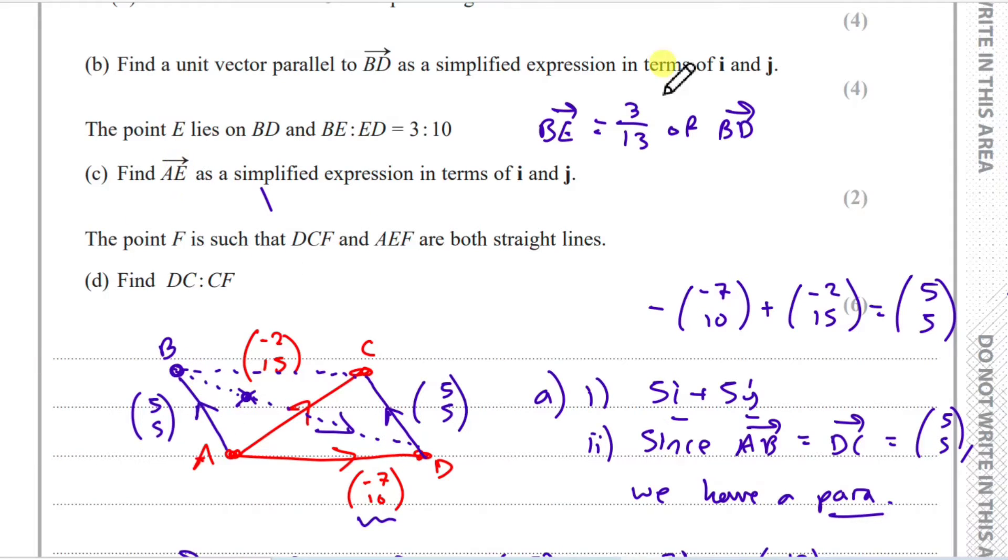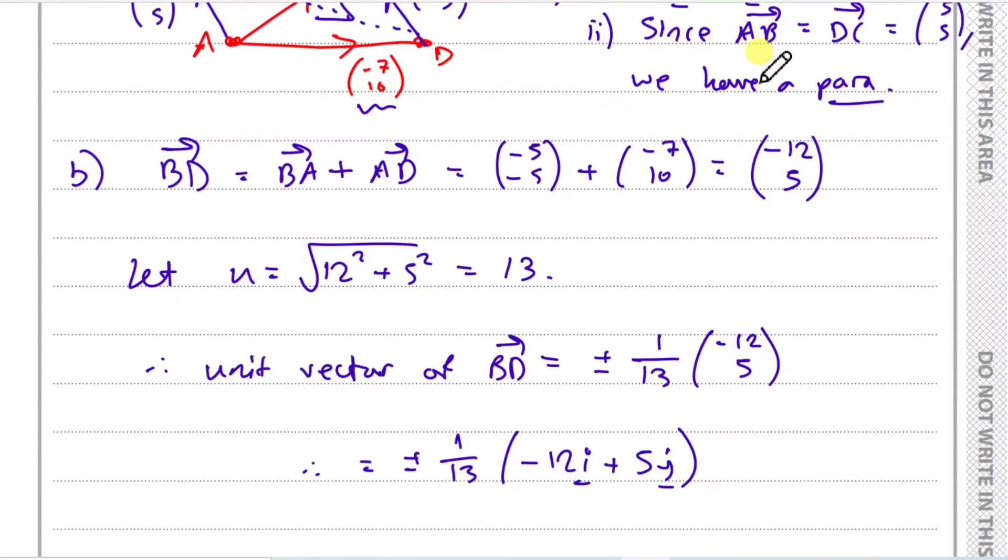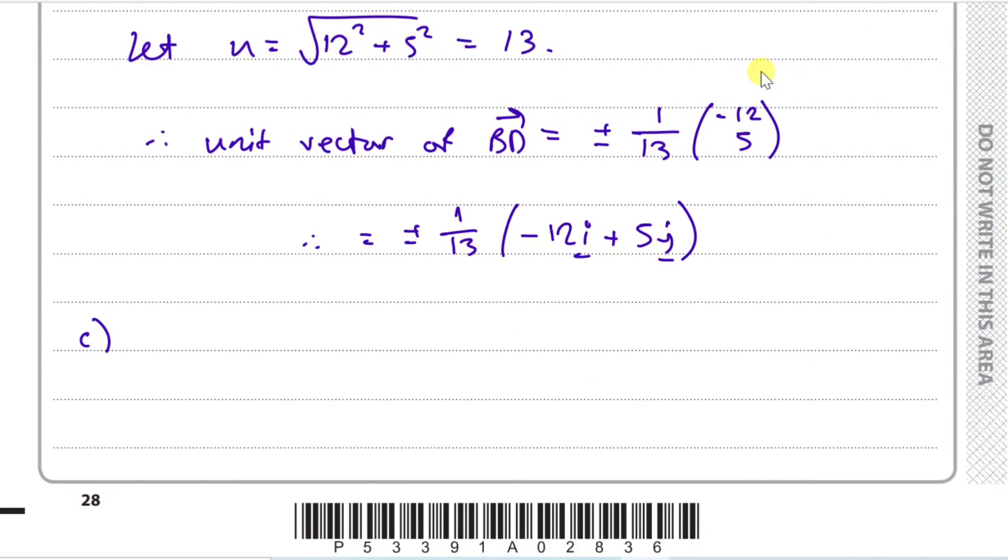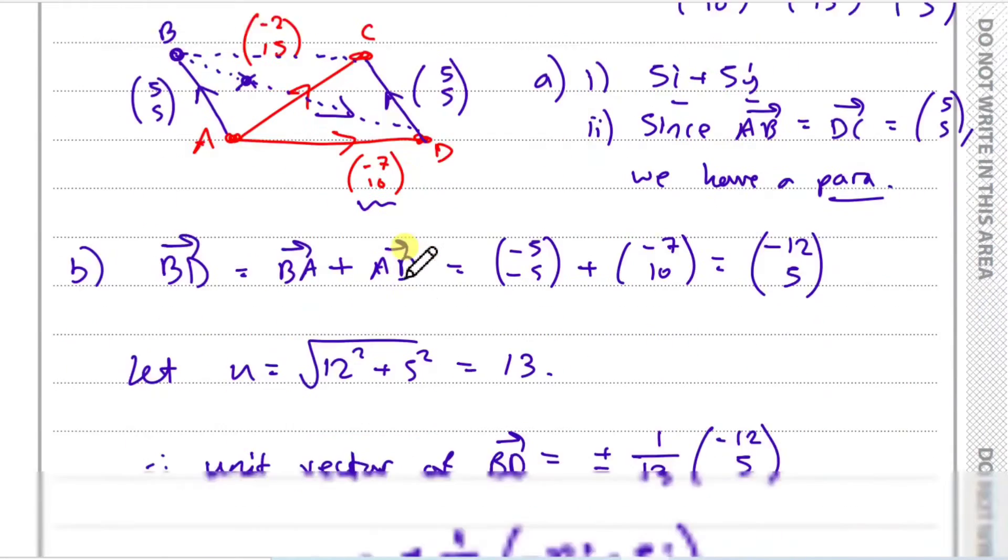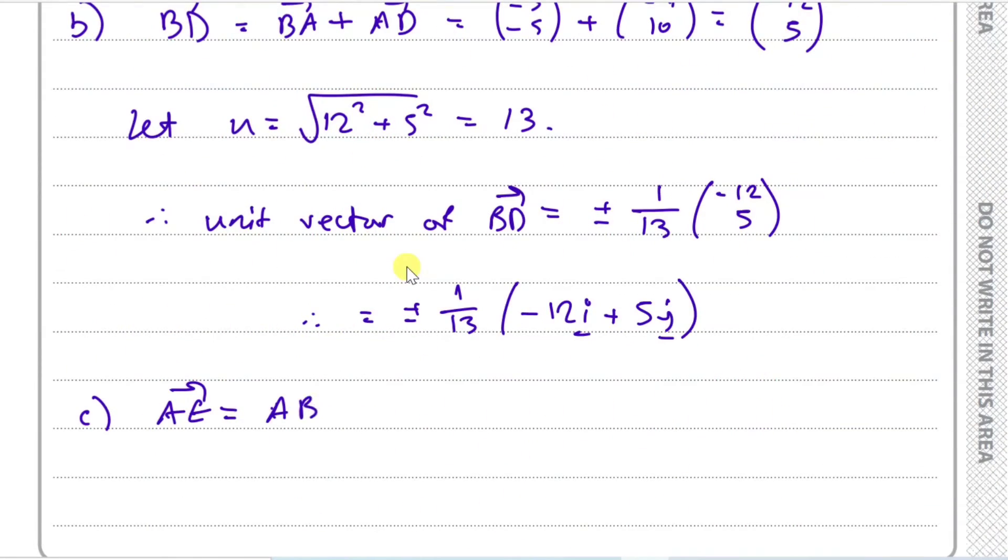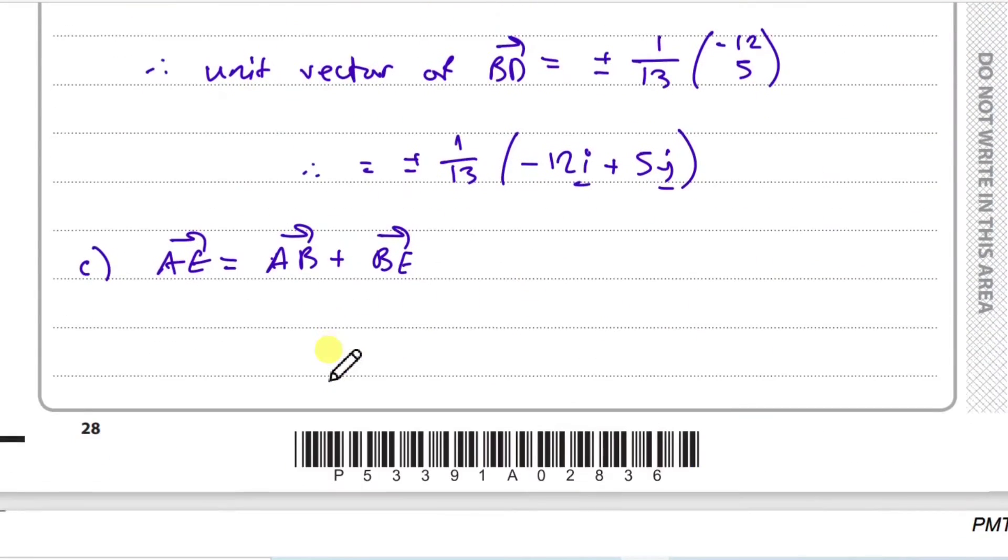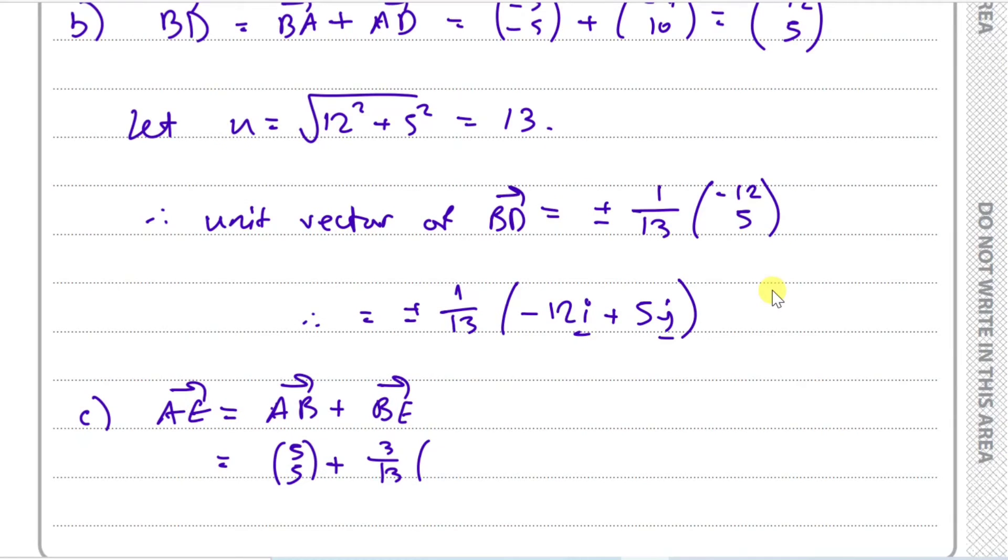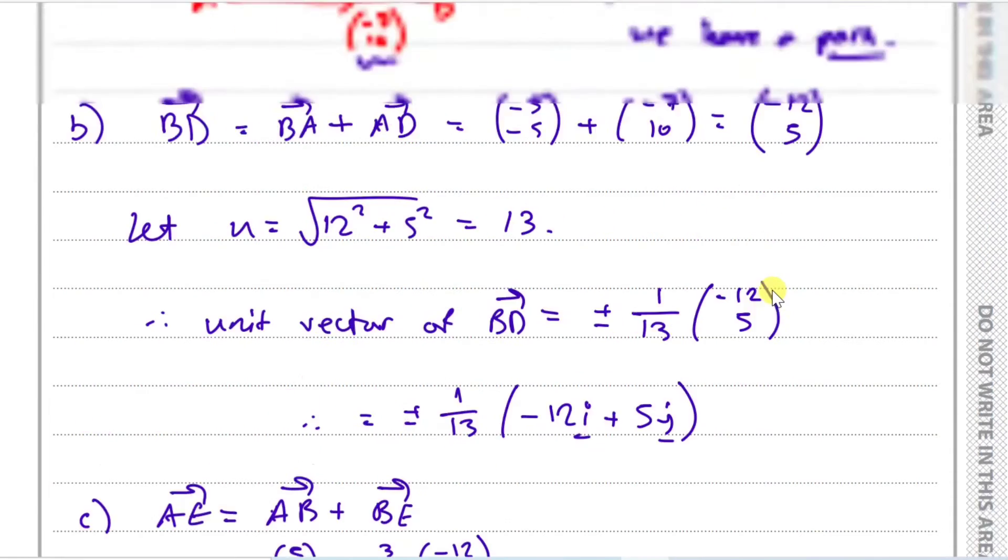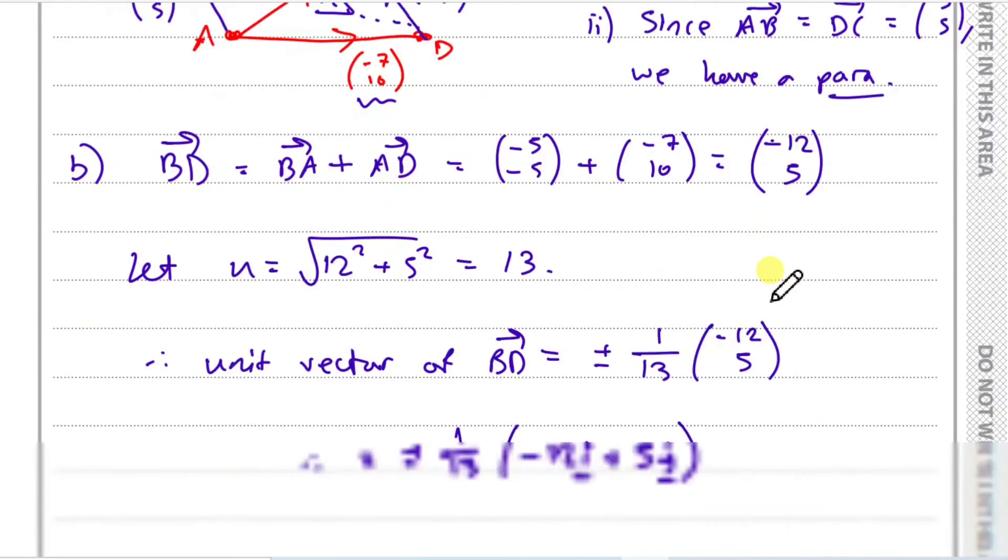So to get to AE, we can say AE is just literally, following the vector length, we can travel AB first and then add up this new BE. It'll just be AB plus BE. That's how you go from A to E. So let's calculate. So AB, which is 5, 5 plus 3 thirteenths of that.